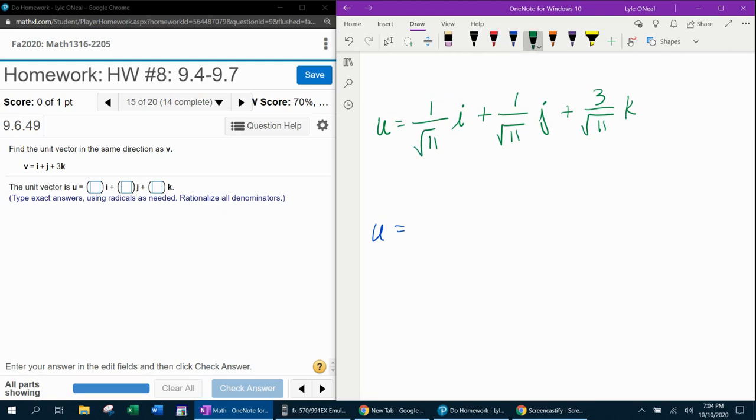So this first expression, the i component of the vector, is going to be square root of 11 over 11, times i. The j component is going to be identical, also square root of 11 over 11.